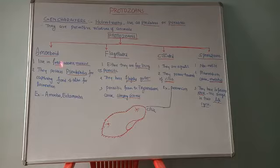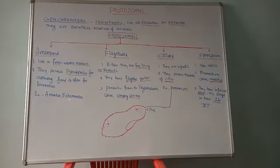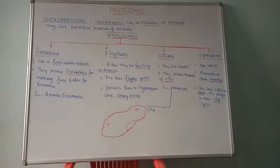As the name indicates, the amoeboid group includes Amoeba and Entamoeba. Amoeba is found in fresh water — majority are found in fresh water and very few in marine (salt) water. Entamoeba is not found in water but leads its life as a parasite in the human intestine.